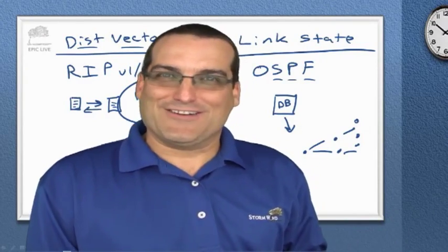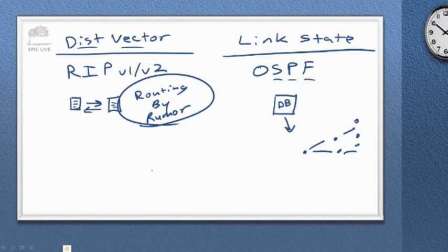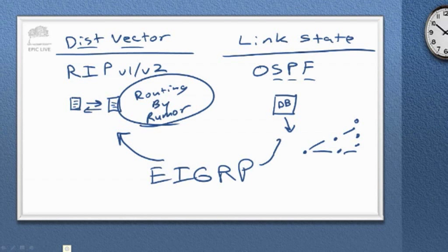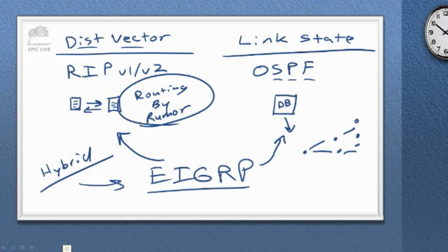Cisco complicates things a bit by inventing EIGRP, which has properties of both distance vector and link state. So a new category was created: hybrid routing protocol. Some people take issue with this, arguing that EIGRP is far more distance vector than anything else, calling it an advanced distance vector protocol instead. Either way, we know it's not pure distance vector and not pure link state.